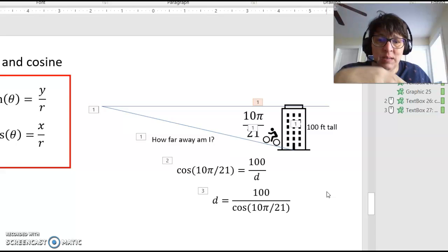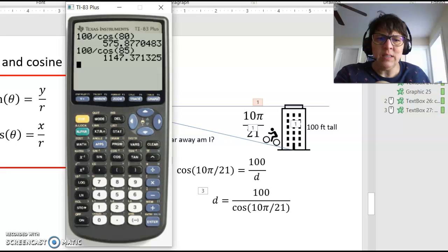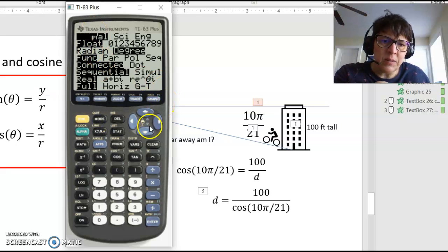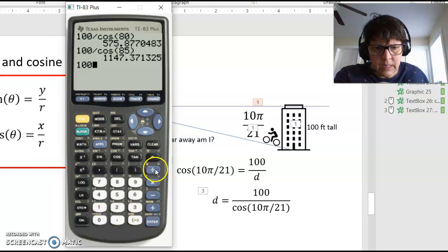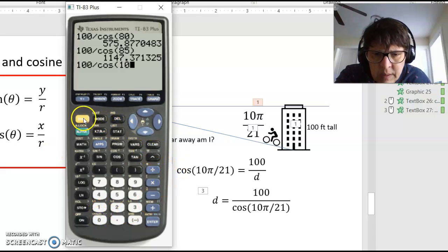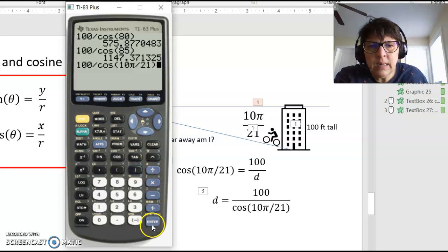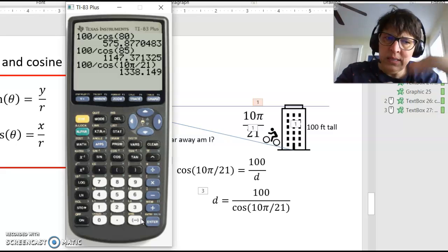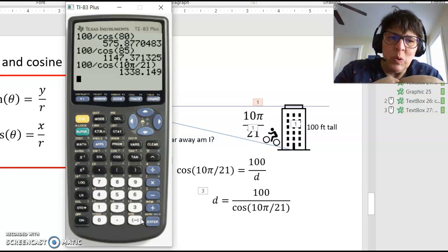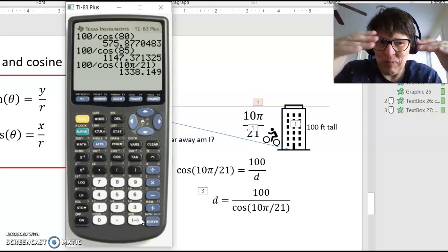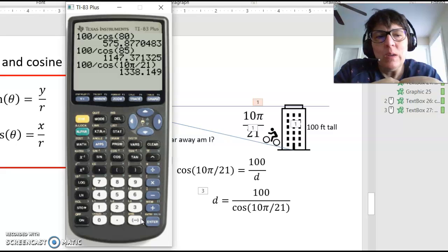Same deal, same function, but when you get to your calculator, you have to make sure you change the mode to radians instead of degrees. So 100 divided by the cosine of 10 pi divided by 21. Pi is right here above my carat button. So second pi divided by 21. Turns out this angle is even shallower to go up on a bicycle, so you have to go a lot further. So you can see up the hill so you can actually see the top of the building.